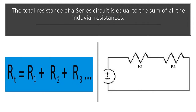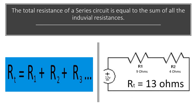RT is equal to the total of all the resistors. In this case, R1 is nine ohms and R2 is four ohms, so RT is gonna be 13 ohms.